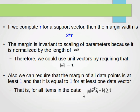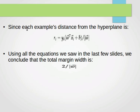What that means is y_i times (w^T x_i + b) is at least one — greater than or equal to one. Here y_i is the class of the point and x_i is the feature vector.